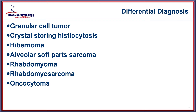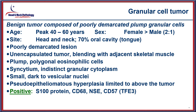Granular cell tumor is a benign tumor composed of well-demarcated to poorly demarcated plump granular cells. It has a fairly wide age range at initial presentation, with women affected a little more commonly. The head and neck is by far the most common site, with about 70% of lesions involving the oral cavity. It is usually poorly encapsulated with plump polygonal eosinophilic cells arranged in a syncytial architecture with very small to dark and vesicular nuclei. S100 and CD68 are usually immunoreactive.